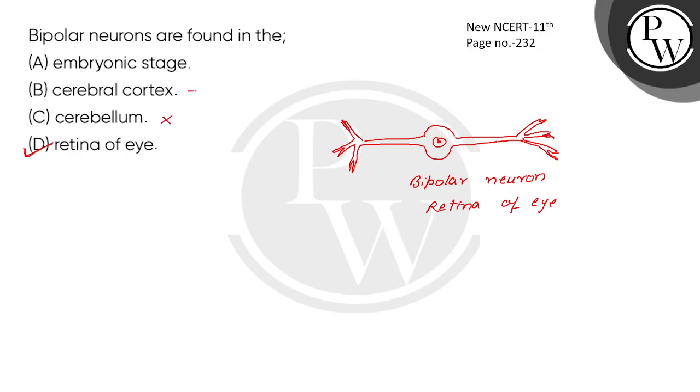Cerebellum, Cerebral Cortex - you can find multipolar Neurons. In the Embryonic Stage...